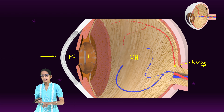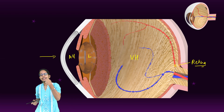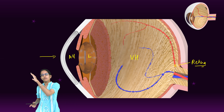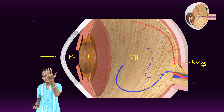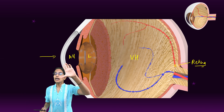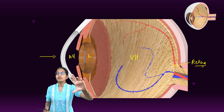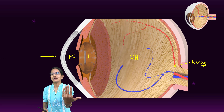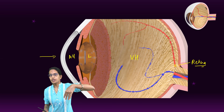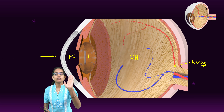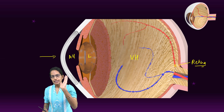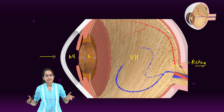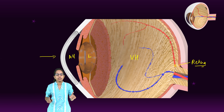So what happens is light enters through the cornea, moves through the aqueous humor, through the lens, through the vitreous humor, and then it moves to the retina. Now at the retina, the focus happens and this is where the cones and the rods take part.